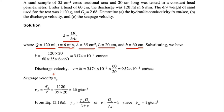Next, we find the discharge velocity. The formula is v = k × i, where k = 3.174 × 10⁻³ and i = h/L = 60/20 = 3. So the discharge velocity v = 9.52 × 10⁻³ cm per second.